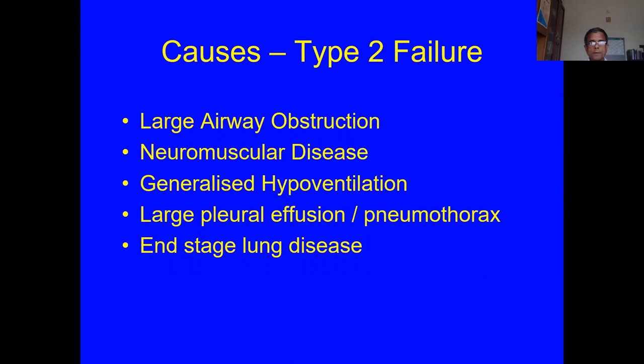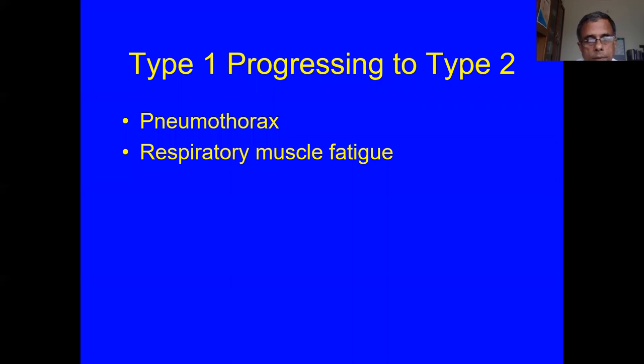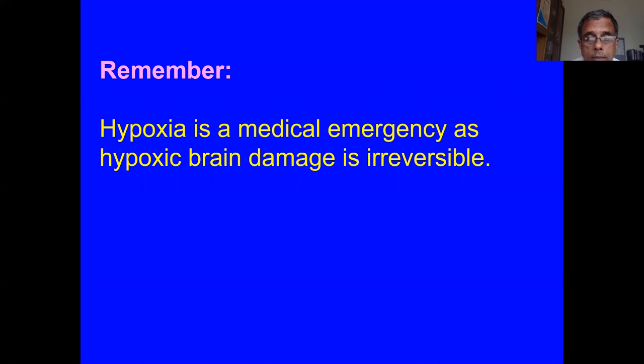Type 2 respiratory failure causes: large airway obstruction, neuromuscular disease, generalized hypoventilation like obstructive sleep apnea, obesity with Pickwickian syndrome, large pleural effusion or pneumothorax, and end-stage lung disease. Type 1 can progress to Type 2: for example, if a person with Type 1 respiratory failure develops a pneumothorax, it can become Type 2, with carbon dioxide retention developing. Respiratory muscle fatigue causes the CO2 to start climbing. Remember: hypoxia is always a medical emergency because hypoxic brain damage is irreversible.